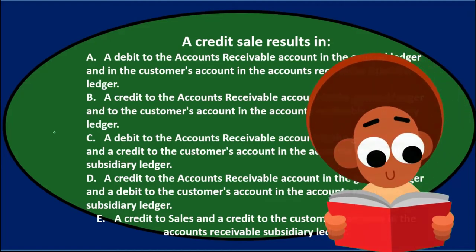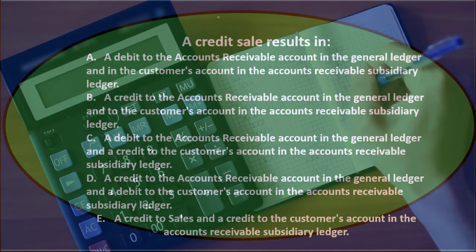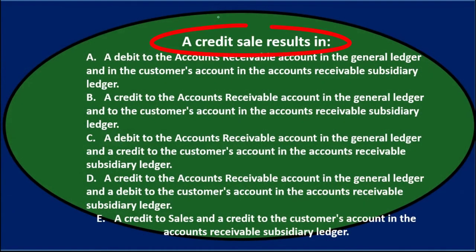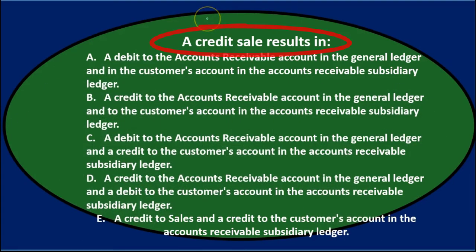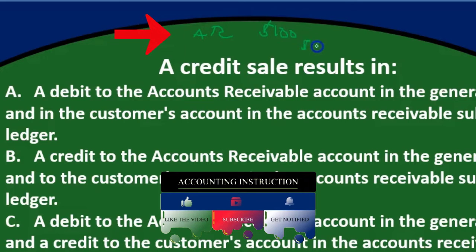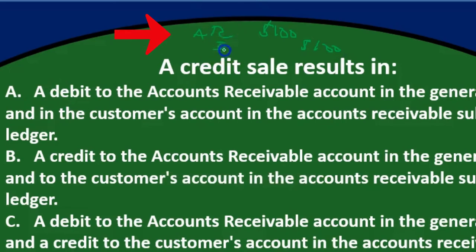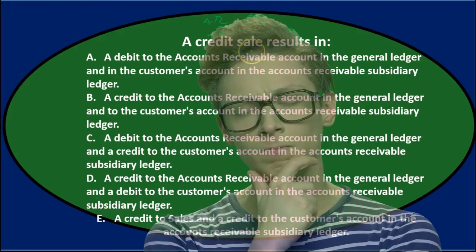Since this involves a journal entry, let's write it down first. For a credit sale, we made a sale but didn't get cash — we got accounts receivable. So we debit AR for some amount, and credit income or sales (whatever the income account is). That's the normal journal entry. Now they're talking about the subsidiary ledger, which backs up the accounts receivable account with detail ordered by customer.